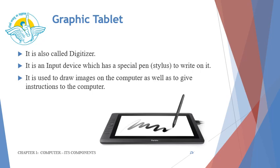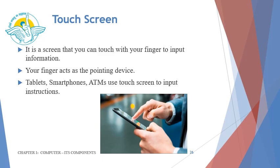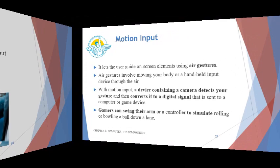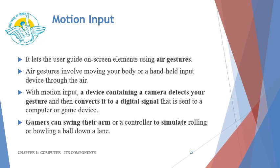The next example of an input device is a graphic tablet, also called a digitizer. It is an input device which has a special pen, also known as a stylus, to write on it. It is used to draw images on the computer as well as to give instructions to the computer. Touch screen — it is a screen that you can touch with your finger to input information; your finger acts as the pointing device. Tablets, smartphones, and ATMs use touch screens to input instructions. Next is motion input, which lets the user guide on-screen elements using air gestures. A device containing a camera detects your gesture and converts it to a digital signal sent to a computer or game device.